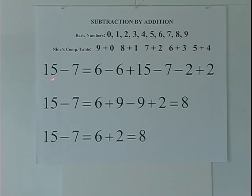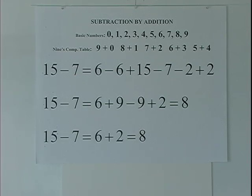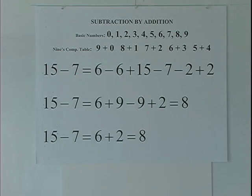In subtraction, the number being subtracted from — fifteen in this case — is called the minuend. The number being subtracted — seven in this case — is called the subtrahend. The result of this operation called subtraction is called the difference. So fifteen minus seven equals eight; eight is the difference. Minuend minus subtrahend equals the difference.